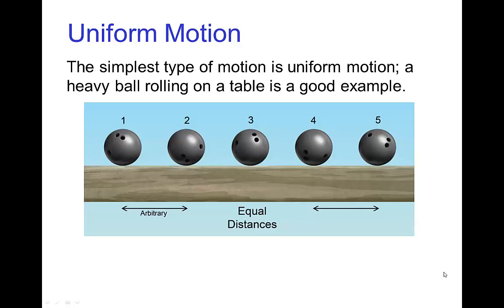Uniform motion is the simplest type of motion. An example would be something like a heavy bowling ball rolling across the floor. What makes uniform motion very simple is because the speed is constant — the spacing is constant, so we have between each of these key poses the same distance or spacing.